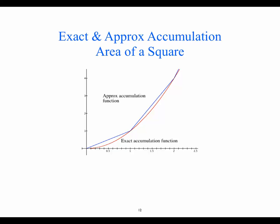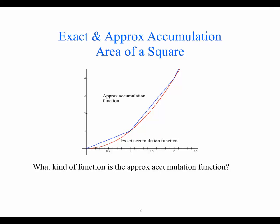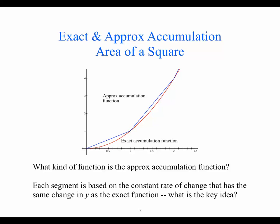Here's an example of an approximate accumulation function. What kind of function is that? Piecewise linear — the same as we had before. Each segment of that piecewise linear is based on a concentrated change that has the same change in y as the exact accumulation function. For instance, for this first segment, it is based on the constant rate of change that has the same change in y as our original function.